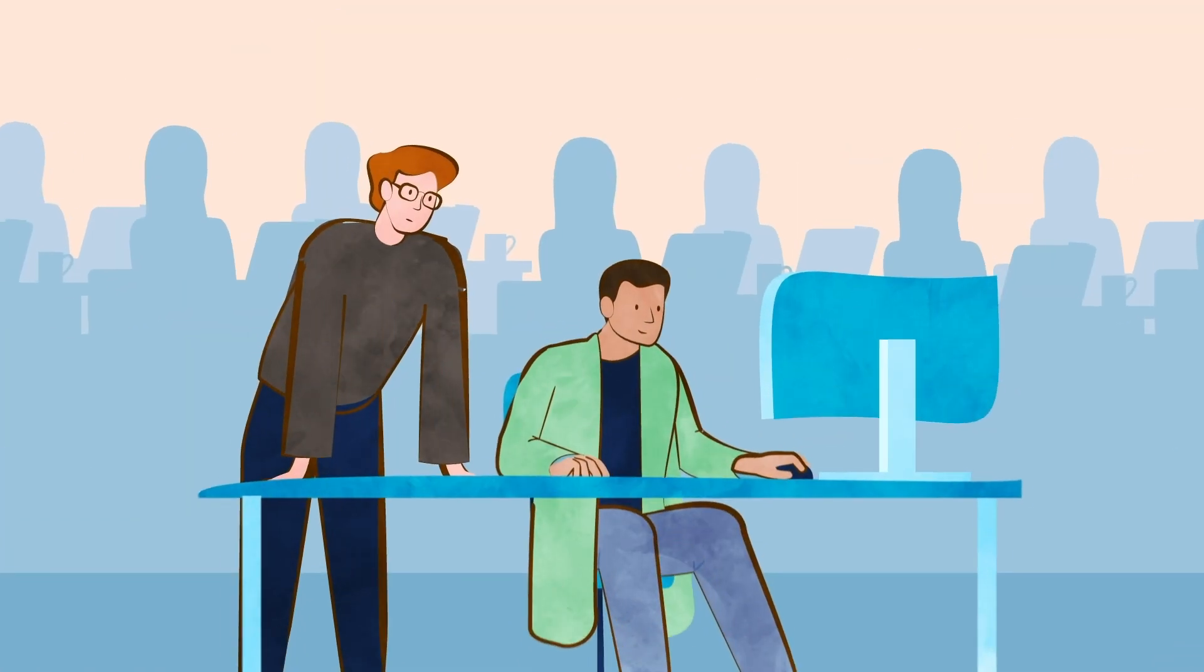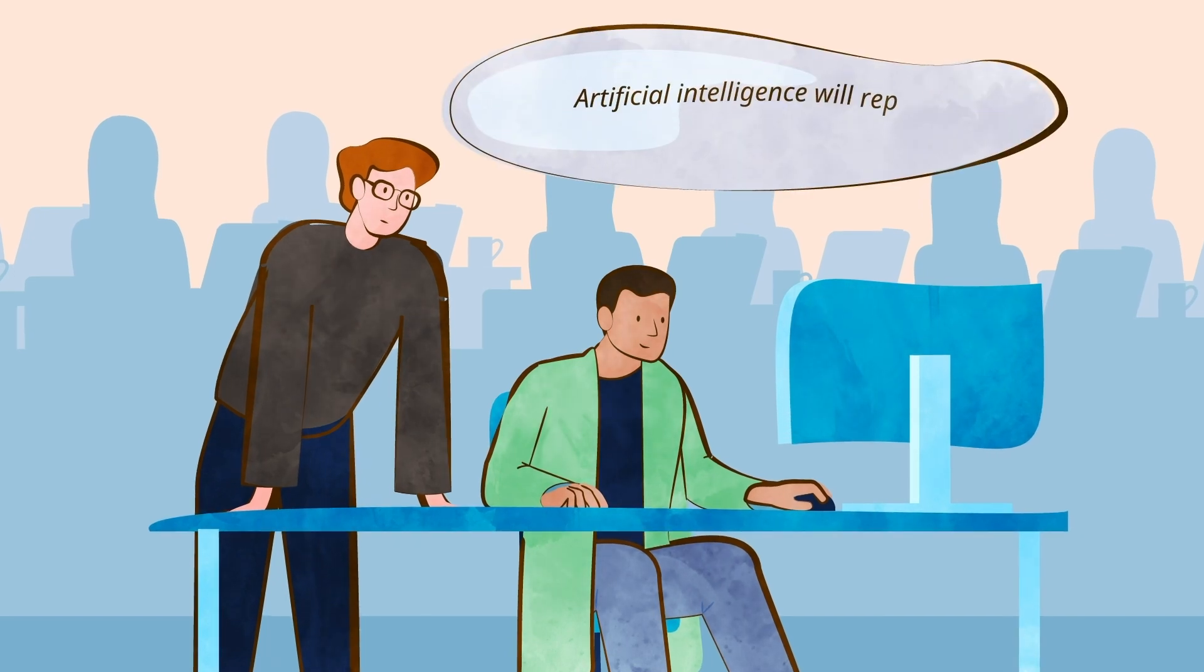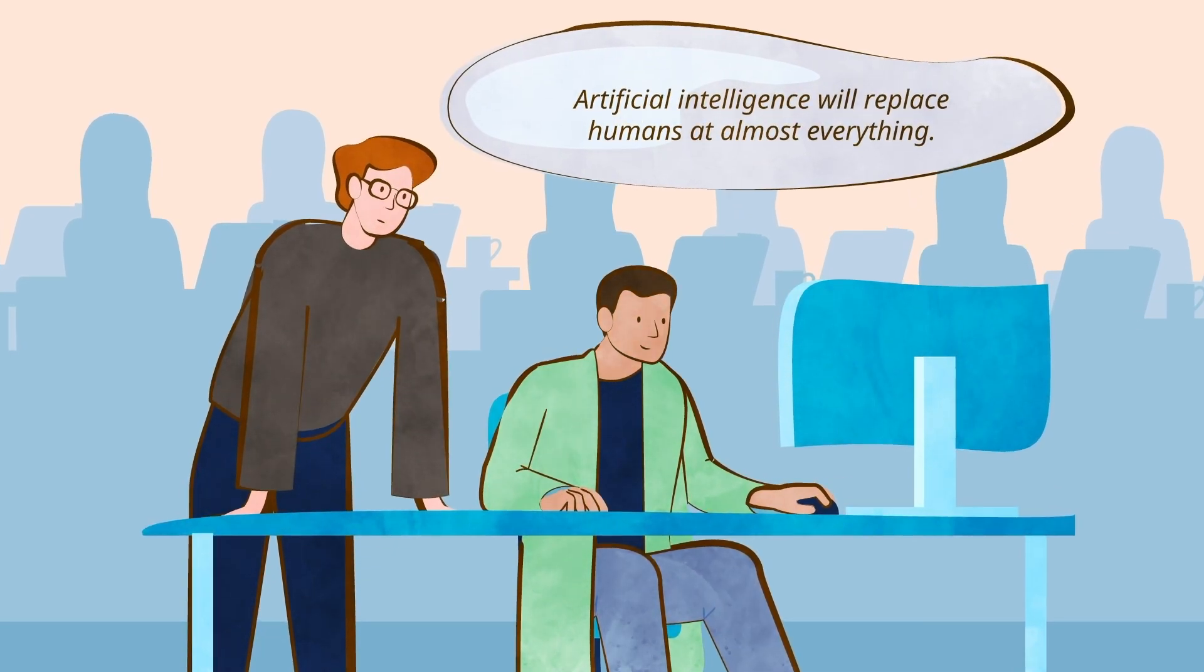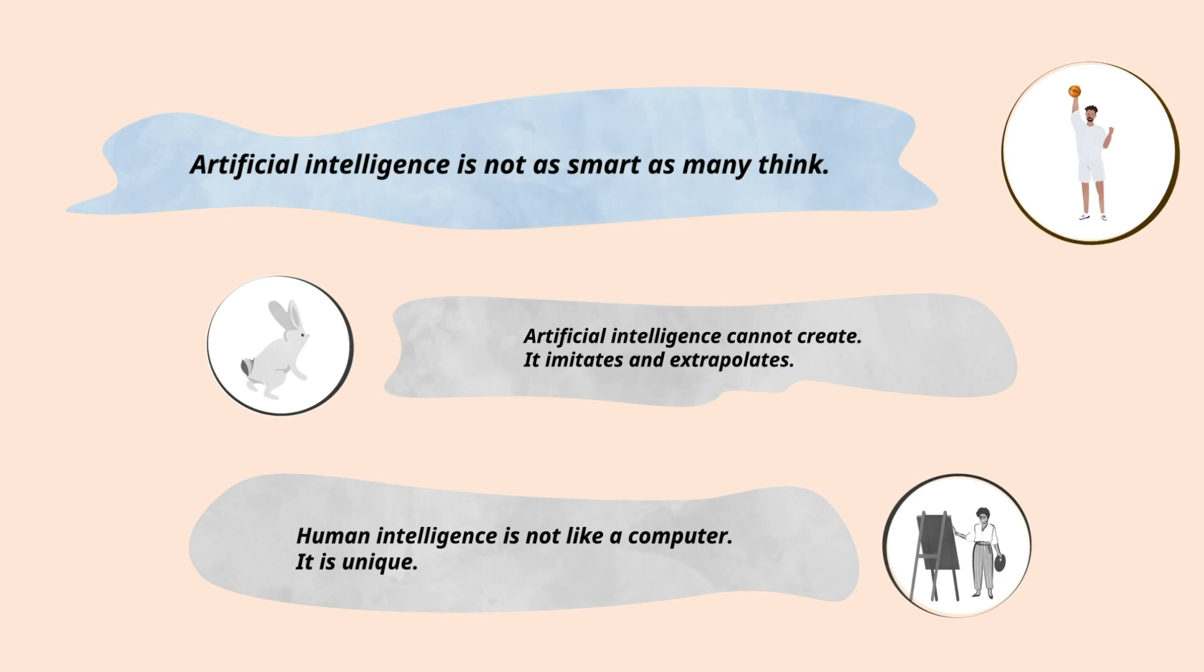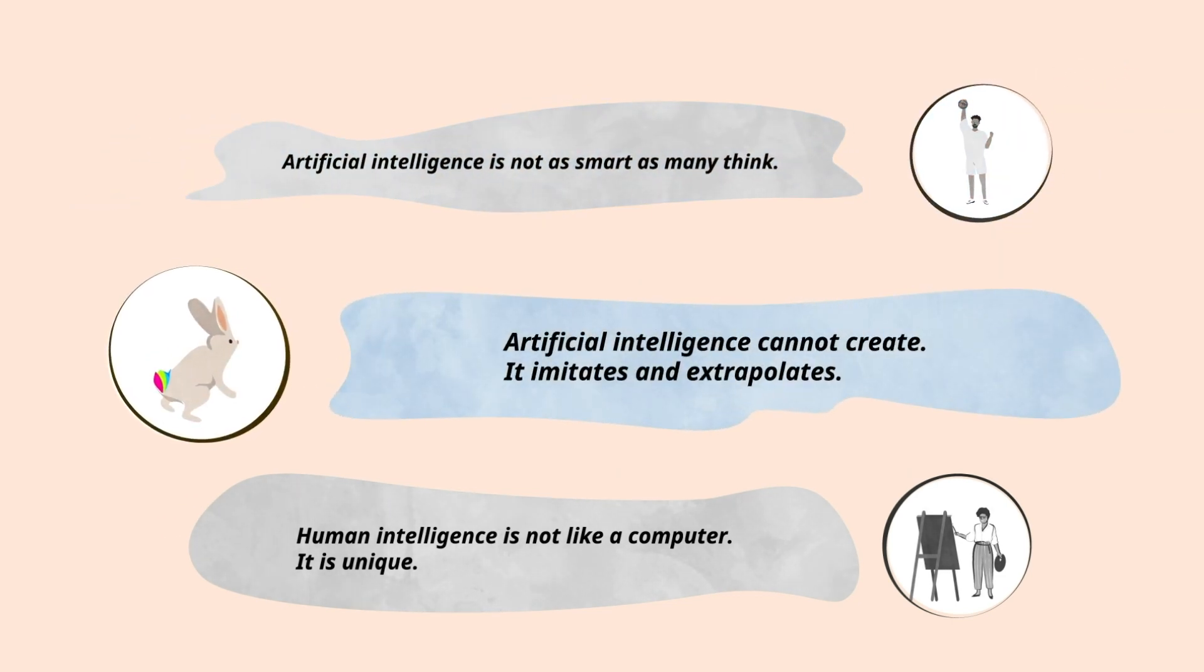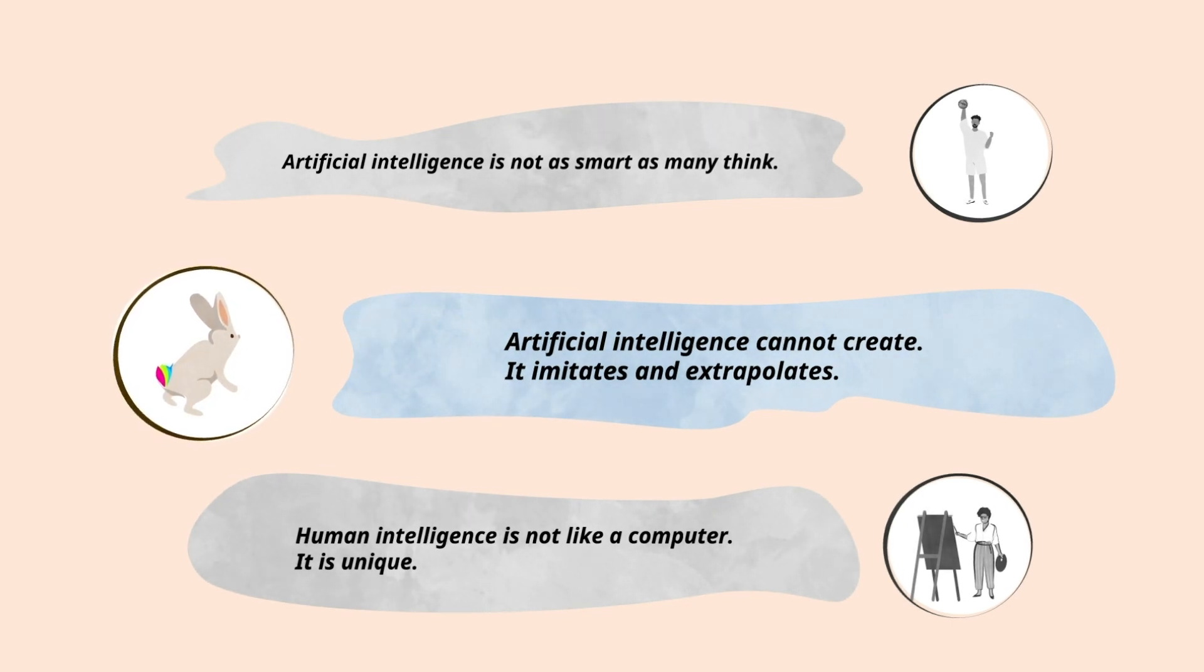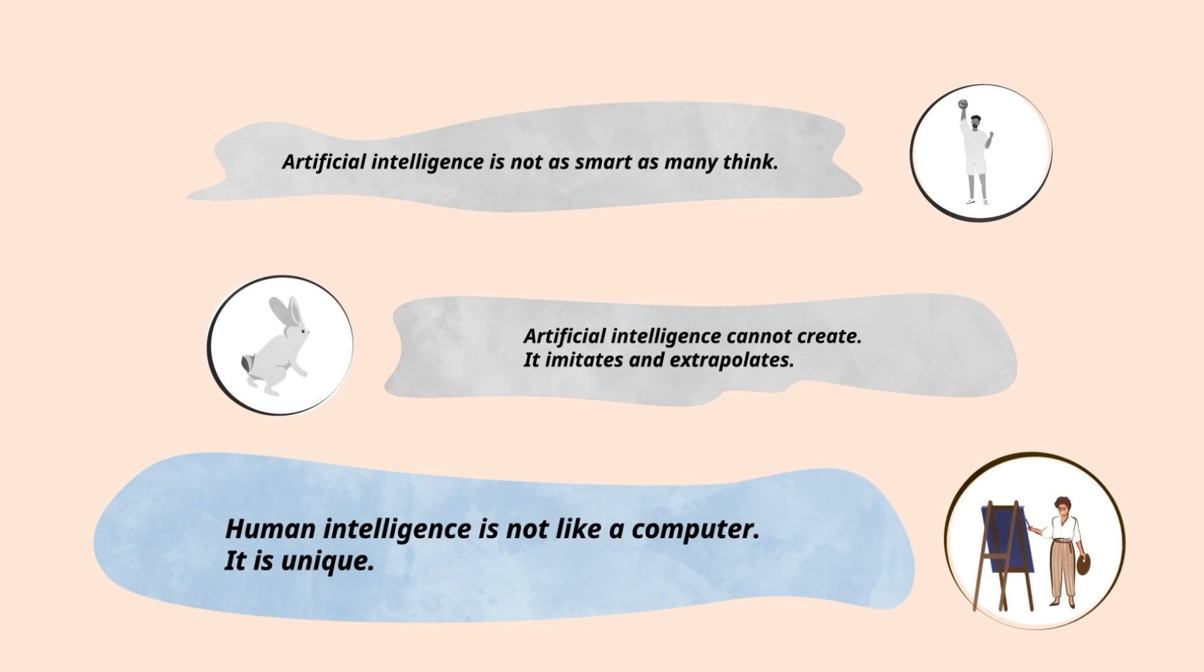So, the next time someone says artificial intelligence will replace humans at almost everything, remember these three things. Number one, artificial intelligence is not as smart as many think. Number two, artificial intelligence cannot create. It imitates and extrapolates. And number three, human intelligence is not like a computer. It's unique.